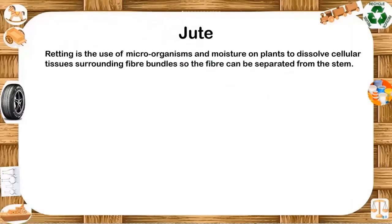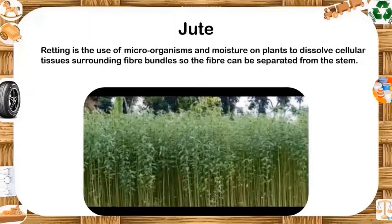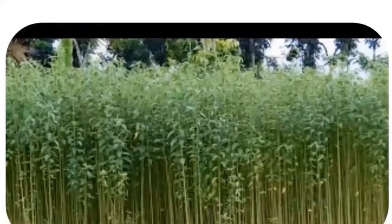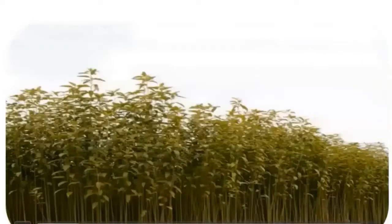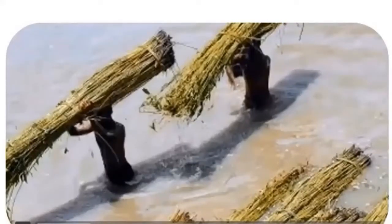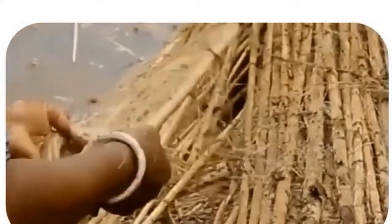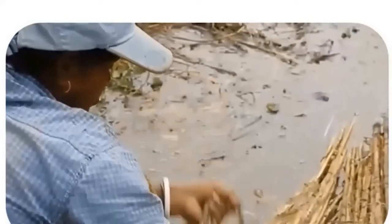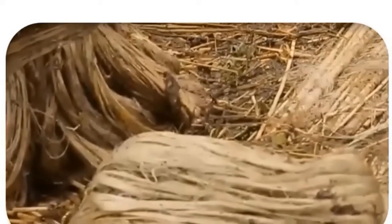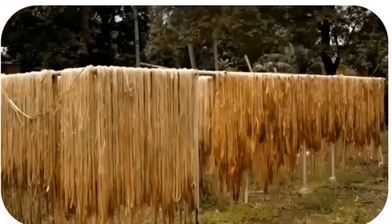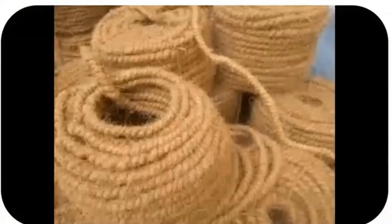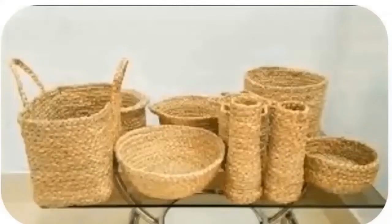After harvesting the jute plants, jute fibers are extracted by retting. Retting is the use of microorganisms and moisture on plants to dissolve cellular tissues surrounding fiber bundles so the fiber can be separated from the stem. The retting process consists of bundling jute stems together and submerging them in water. When stripping of the jute fiber is complete, extracted jute stalks are dried in the open air, washed with water and again dried on bamboo poles. The resultant fiber is then sold off to market to produce various products such as crafts, jute geo-textiles, etc.